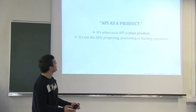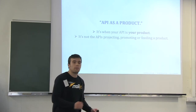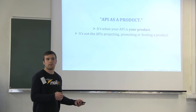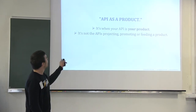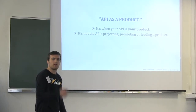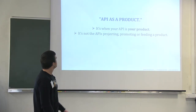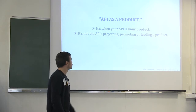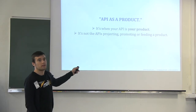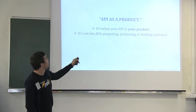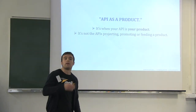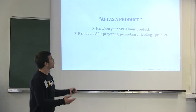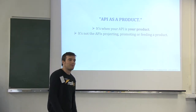API as a product is when your API is your project. This is what happens for us. Twilio is another example. If I take the classification of Freescale — they made a presentation yesterday — it's not the API projecting, promoting, or feeding a project. Projecting would be Salesforce in their example. Promoting would be the Amazon API to distribute some products. And feeding a project would be Twitter.